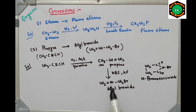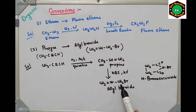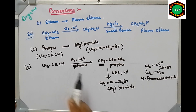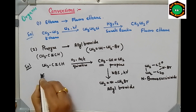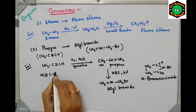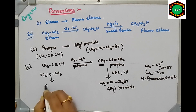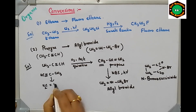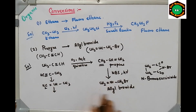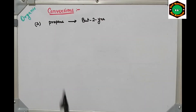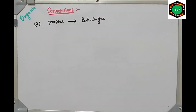To summarize: starting from propyne (CH≡C-CH3), you do reduction to get CH2=CH-CH3 (propene), and the final product is CH2=CH-CH2Br (allyl bromide). You can write it either way — don't get confused. Next conversion is propene to butyne.